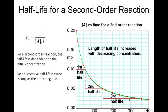Now let's look at the half-life for a second-order overall reaction. The equation is: half-life equals 1 over the initial concentration times K. So the half-life does depend on concentration. Because of the inverse relationship, as the concentration gets smaller the half-life gets longer. For a second-order reaction, the half-life is dependent on both the initial concentration and the rate constant, and as concentration decreases the half-life increases.